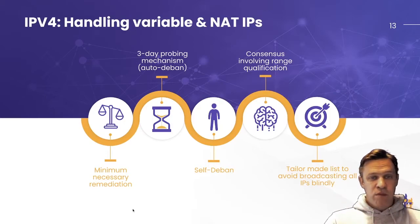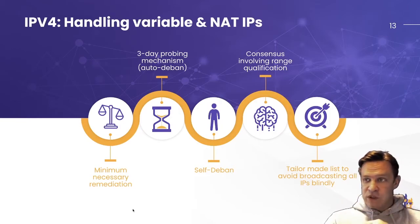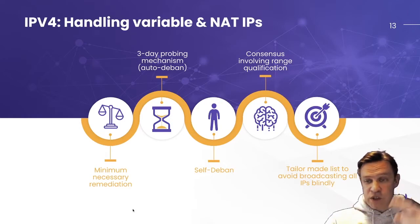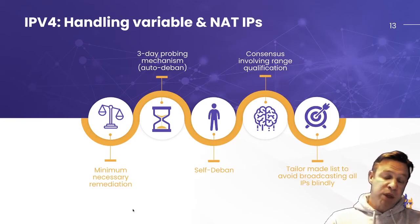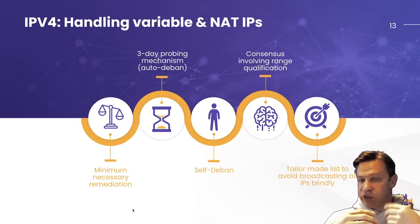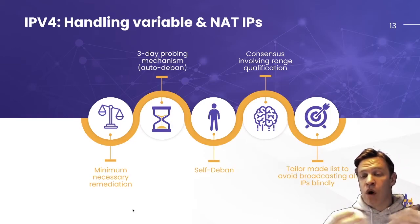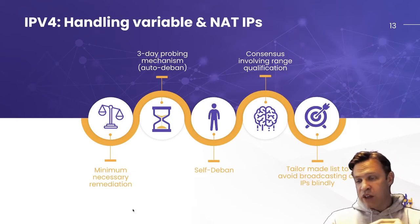We have a three-day probing mechanism — the 72 hours I mentioned. You can also self-deban yourself, though it's not easy for hackers because they can't deban all the IPs they're using. There's a CAPTCHA involved, so you can't deban tons of IPs at once. And there's an increasing penalty: if your IP is debanned and caught again and again, there's an increasing time penalty before you can deban yourself again. The consensus also involves range qualification — for example, some IPs used by 4G networks change constantly, so it doesn't make sense to ban them. Also, protocols like UDP are easy to spoof, which makes it complicated to ban UDP-based attacks.